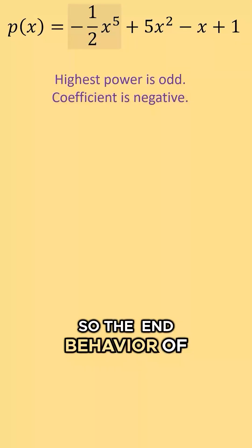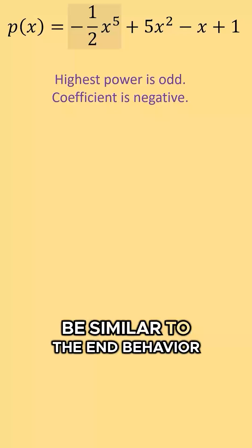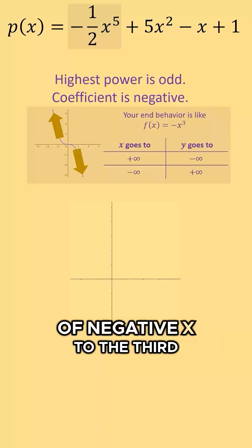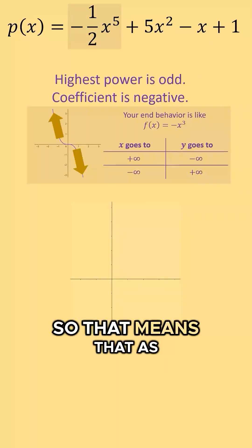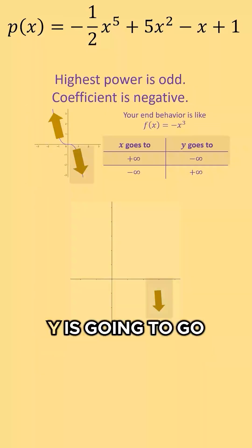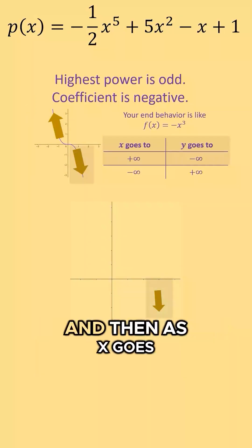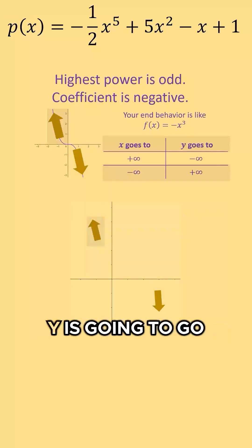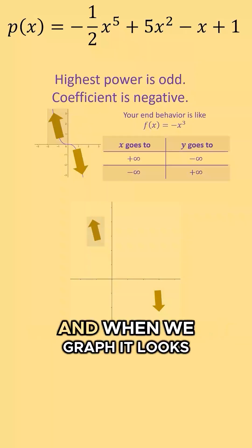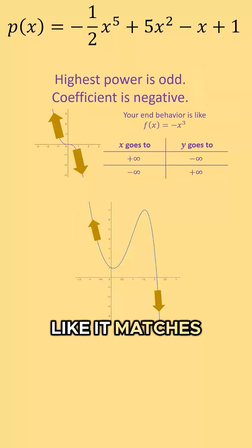So the end behavior of our polynomial is similar to negative x to the third power. That means as x goes to positive infinity, y goes to negative infinity. And as x goes to negative infinity, y goes to positive infinity. When we graph it, it matches.